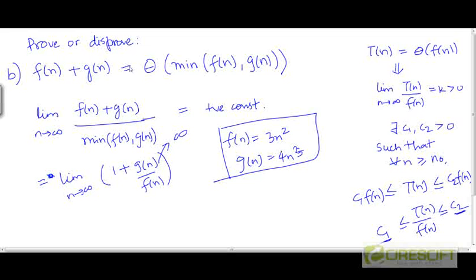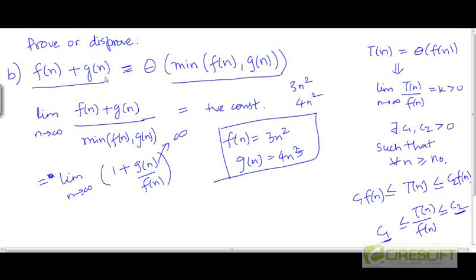Therefore, this is not always true. It is not always true that f plus g is going to be in Theta of the minimum of f and g. This will be true only if f and g have the same rate of growth, as in 3n squared and 4n squared. Because in that case, the minimum of the two functions has the same rate of growth as the larger function. Even though the minimum is lesser in absolute value, both are growing at the same rate, and f plus g will also grow at the same rate as each individually — so it will be in Theta of the minimum.